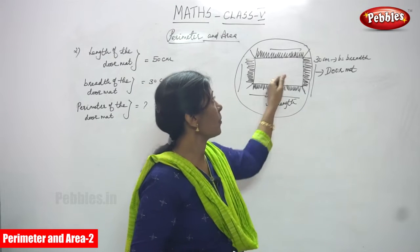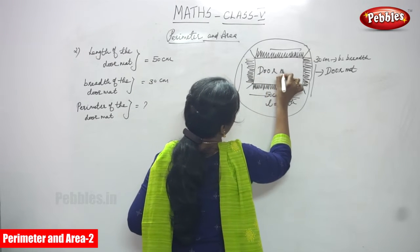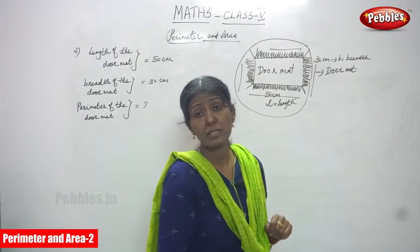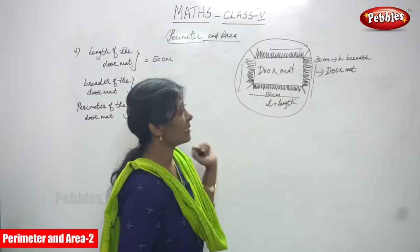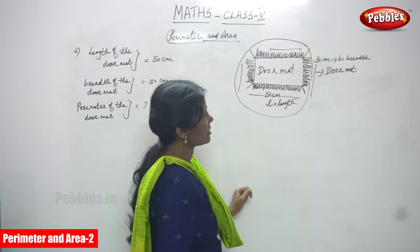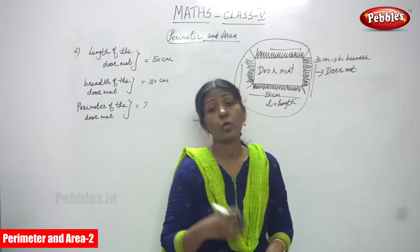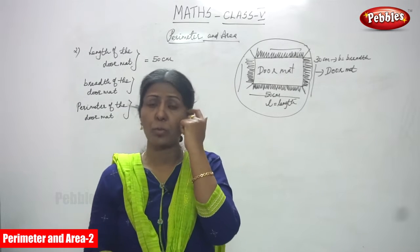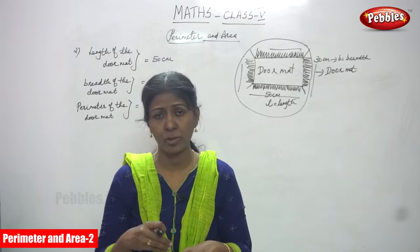This doormat is called what? A doormat. This doormat is in a rectangle shape. So the length is 50 cm and the breadth is 30 cm. We are going to find out the perimeter of the doormat — we have to calculate it.